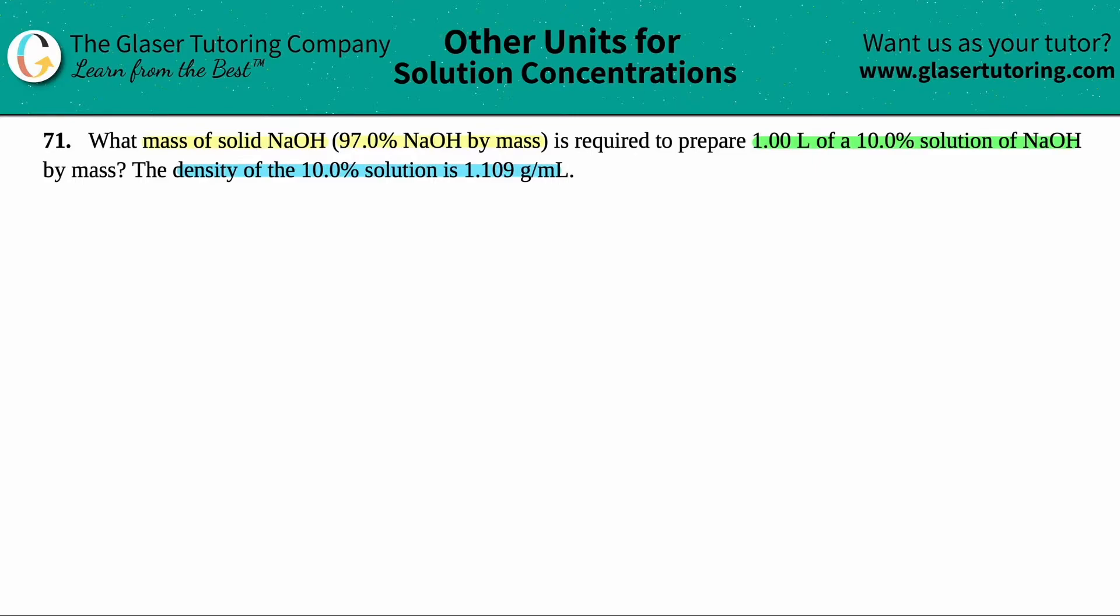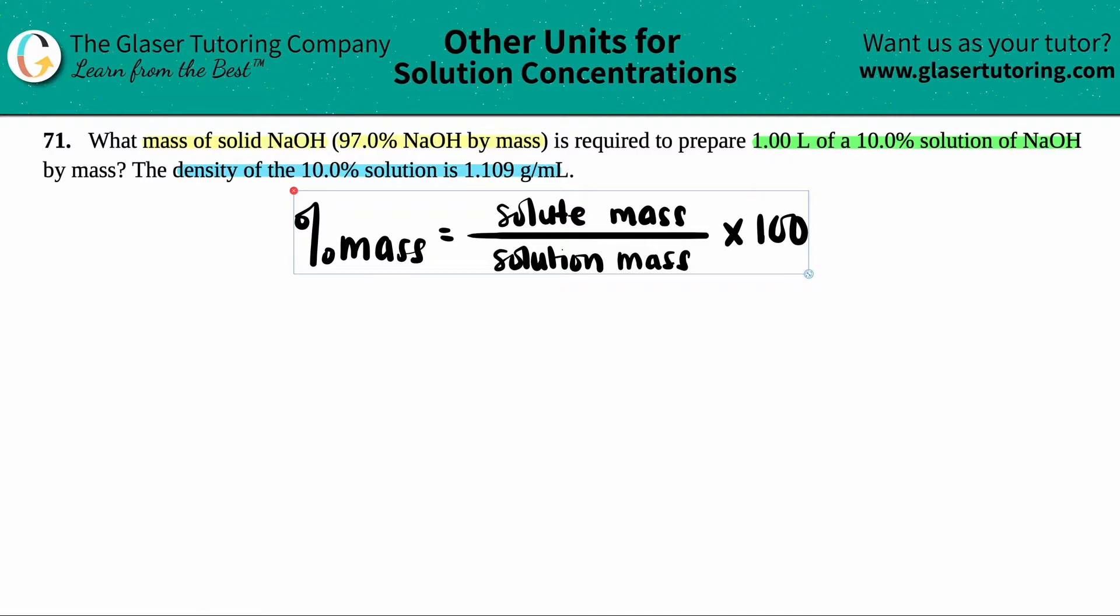The percent mass formula is like any other percent formula. It's part over whole, but it's more specific. So a percent mass of anything is mass on the top divided by mass on the bottom. So we have to be dealing all in grams here or kilograms. But the difference is that the part is now called the solute and the total, the whole is called the solution. Remember your solution is just your solute plus your solvent.